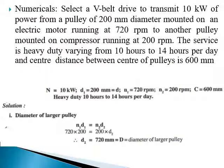The numerical problem: Select a V-belt drive to transmit 10 kilowatts of power from a pulley of 200 millimeter diameter mounted on an electric motor running at 720 RPM to another pulley mounted on a compressor running at 200 RPM. The service is heavy duty, varying from 10 to 14 hours per day, and the center distance between the pulleys is 600 millimeters. Note the given data: Power = 10 kilowatts.